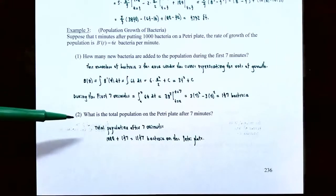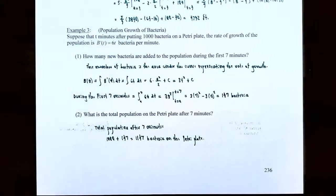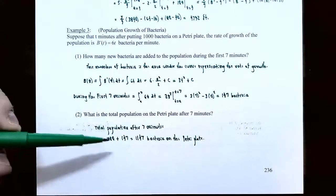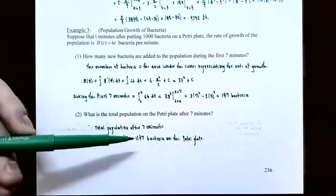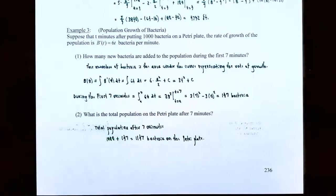Number two: what is the total population on the petri plate after 7 minutes? The problem states the initial population was 1,000 bacteria. We found the population increased by 147 bacteria during the first 7 minutes. So the total is 1,000 plus 147, which is 1,147 bacteria on the petri plate after 7 minutes.